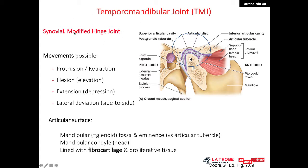At the temporomandibular joint, the possible movements are protrusion and retrusion, and these occur in the superior joint cavity. Depression and elevation occur in the inferior joint cavity. Lateral deviation, which is side-to-side movement, is a combined rotation of one condyle around the vertical axis and anterior translation of the opposite condyle.